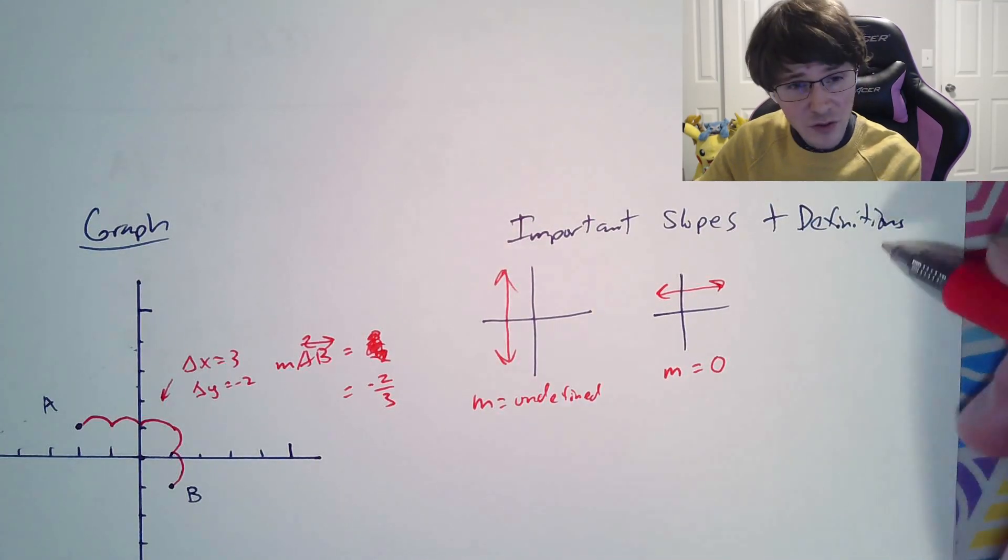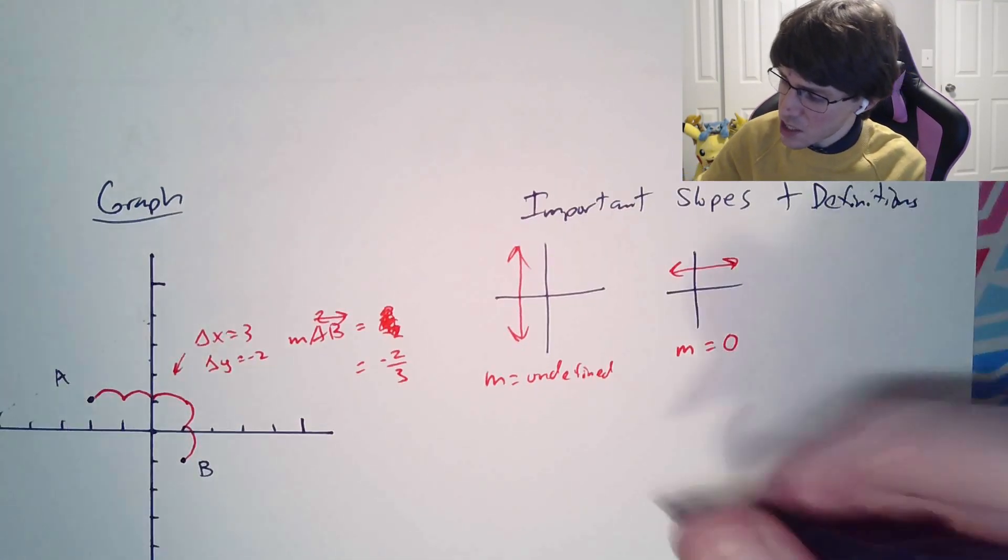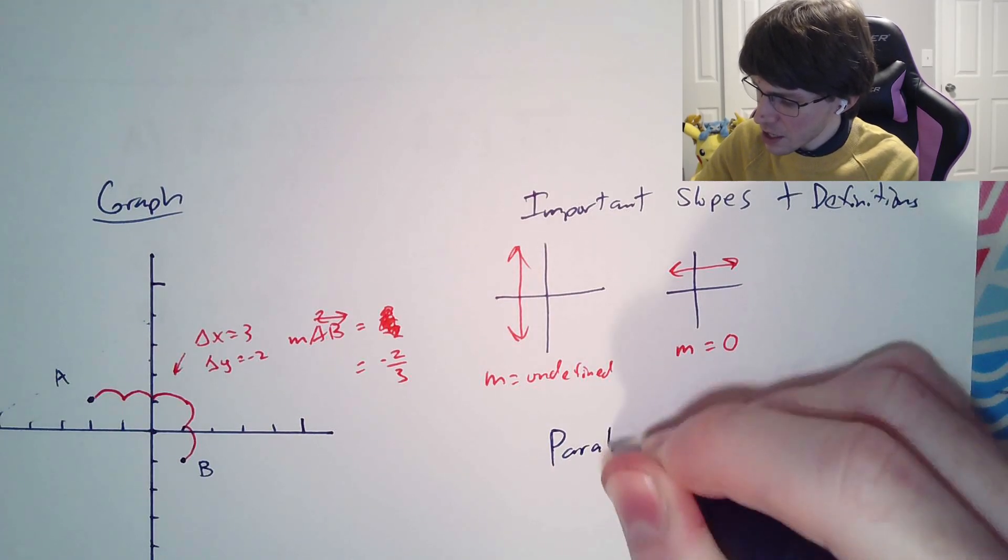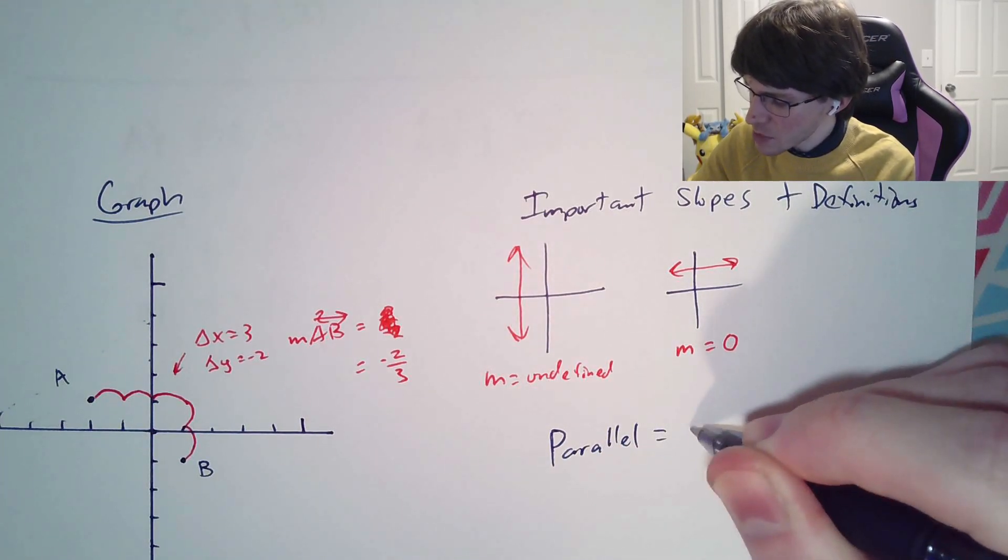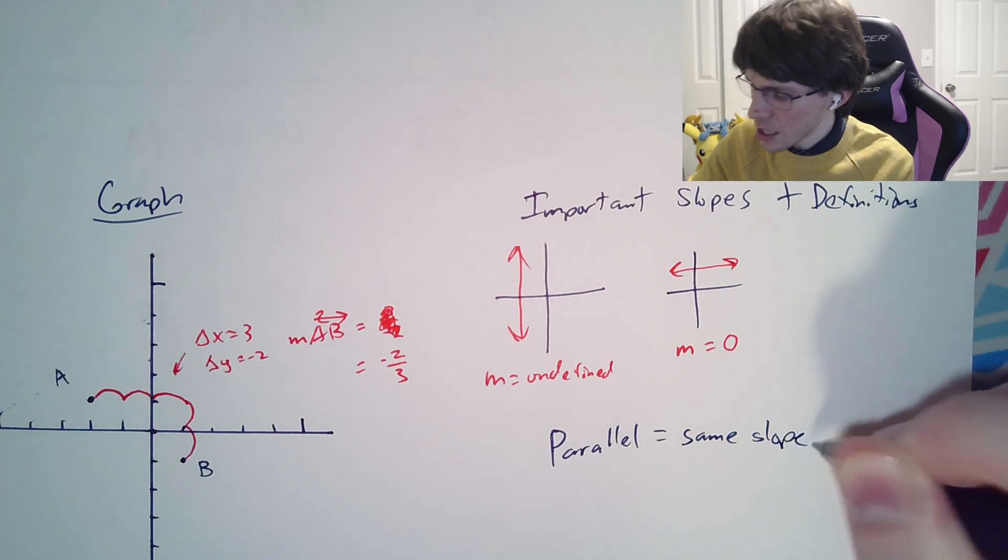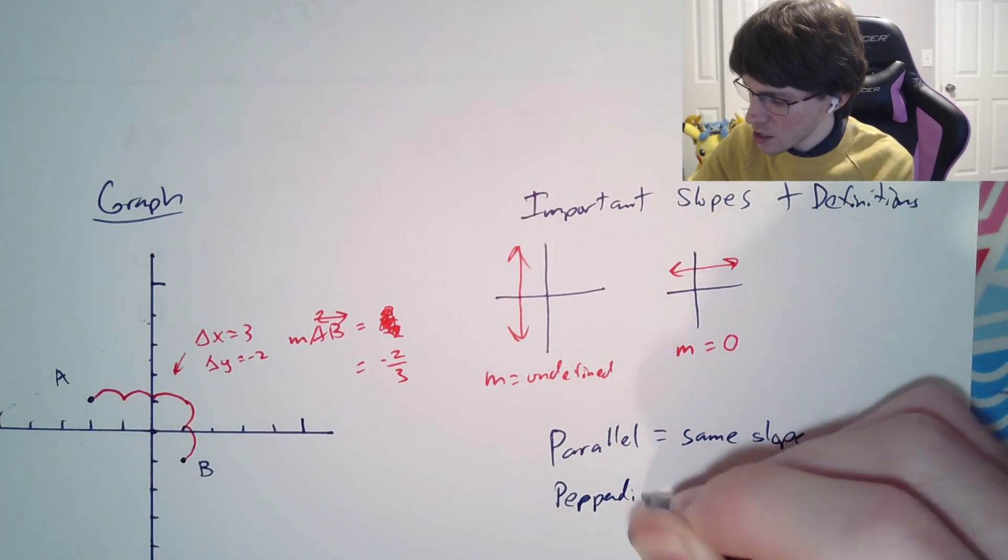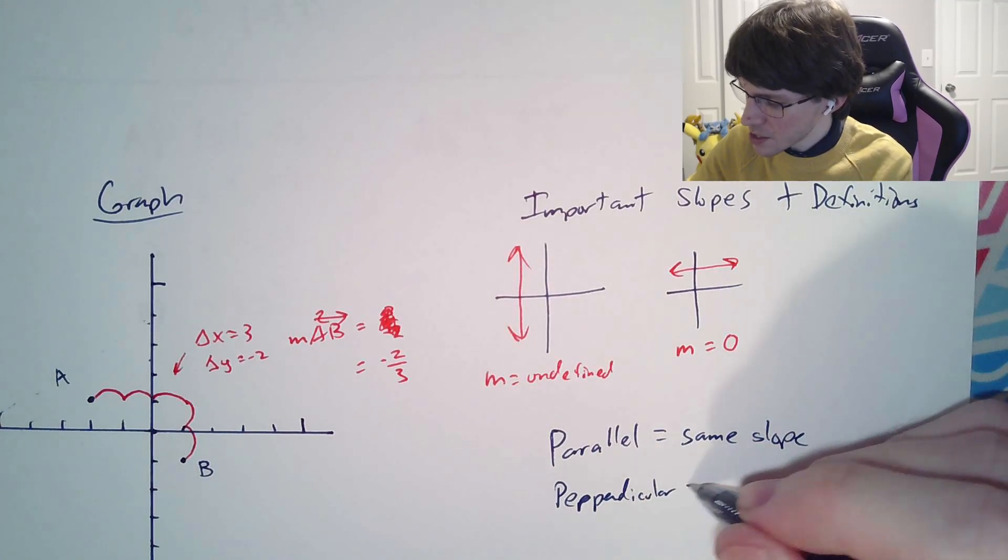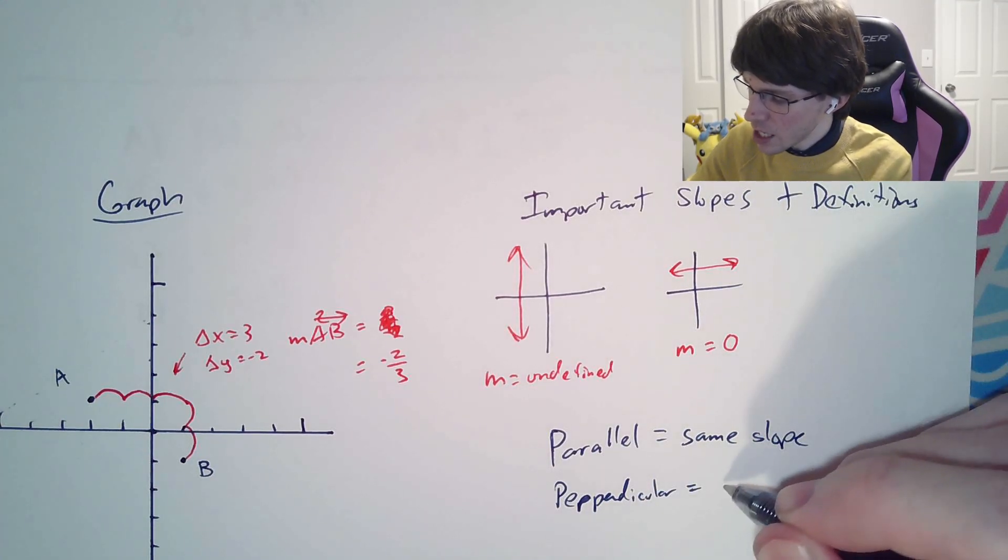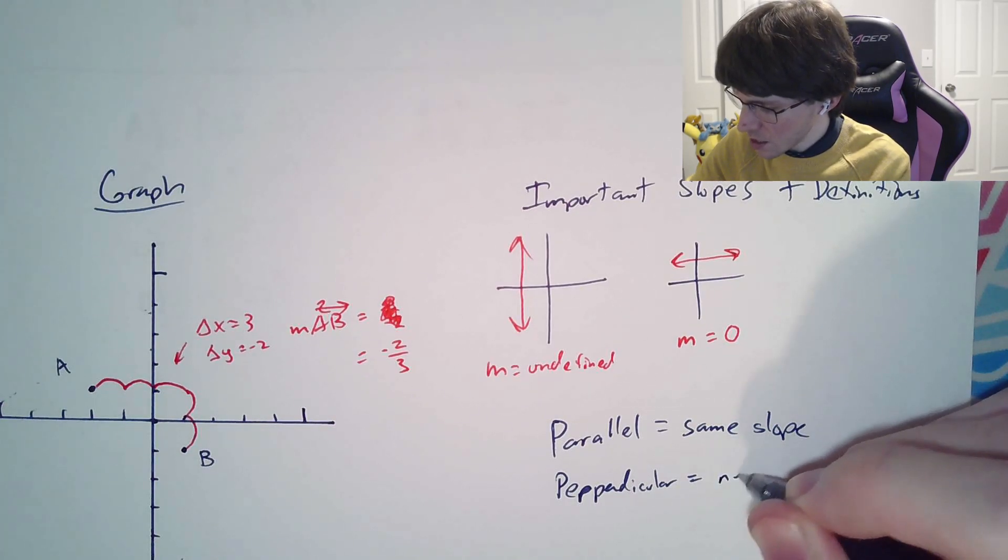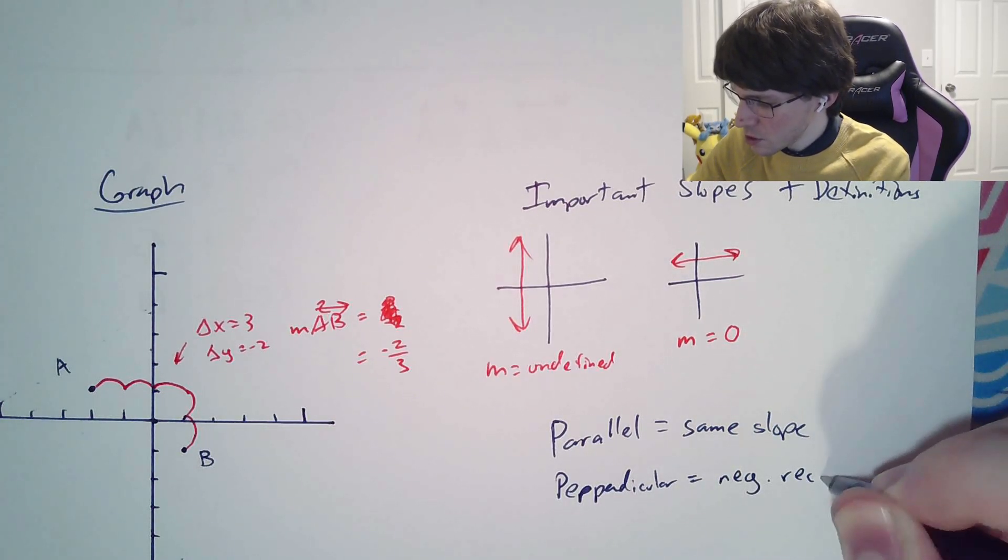Anyways, let's try out some practice problems after definitions. Definitions: if you have parallel lines, parallel lines by definition have the same slope. And perpendicular lines have negative reciprocal slopes.